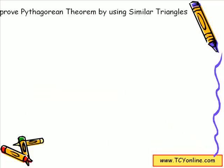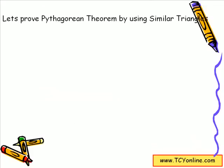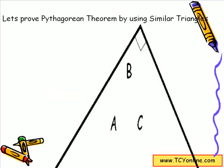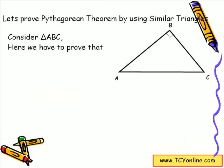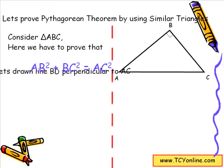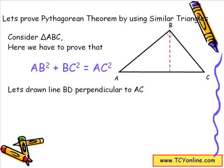Now let's prove the Pythagorean theorem using similar triangles. For this, let's consider triangle ABC, which is right-angled at B. In this triangle, we need to prove that the square of the longest side AC equals the sum of the squares of the other two sides — that is AB² + BC². First of all, we will draw a line BD perpendicular to AC.